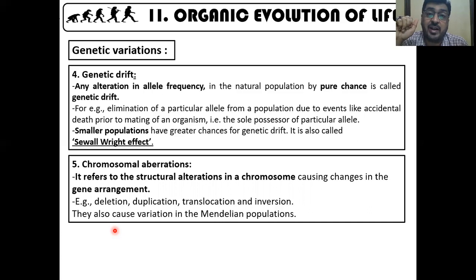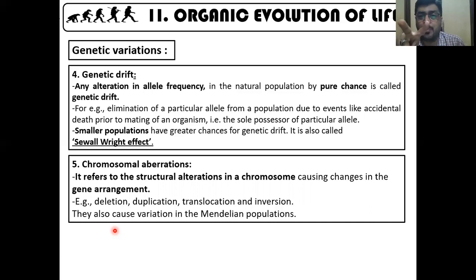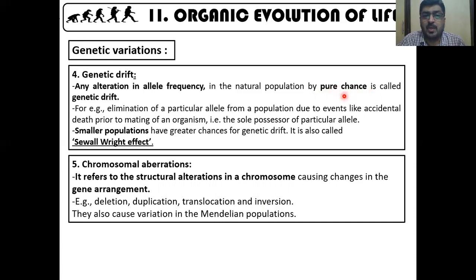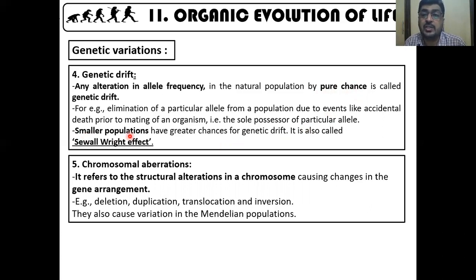Genetic drift is also called the Sewall Wright effect. Two important points: first, it is purely by chance; second, smaller populations have a greater chance of showing genetic drift.